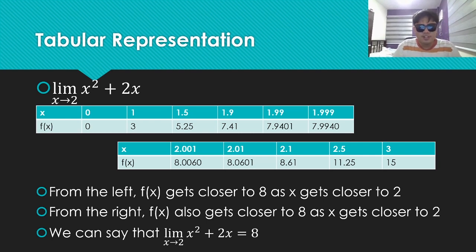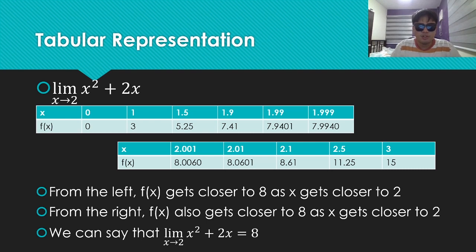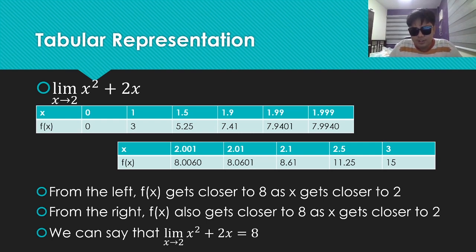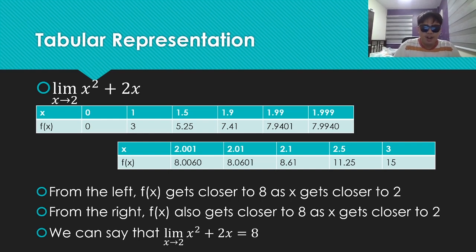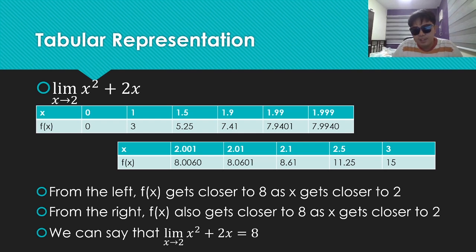Can you see a pattern? Can you see somewhere we're going? Now let's go from the other side: x values 3, 2.5, 2.1, 2.01, 2.001 — going closer to 2. The f of x values are 15, 11.25, 8.61, 8.0601, 8.0060. From the left, f of x gets closer to 8 as x gets closer to 2. And from the right, f of x also gets closer to 8. So we can say the limit as x approaches 2 of x squared plus 2x equals 8, because both sides get closer and closer to 8.